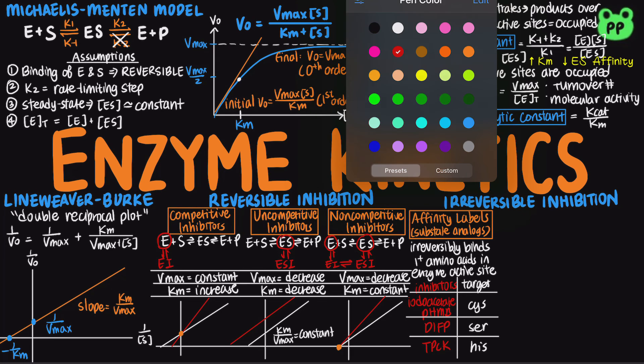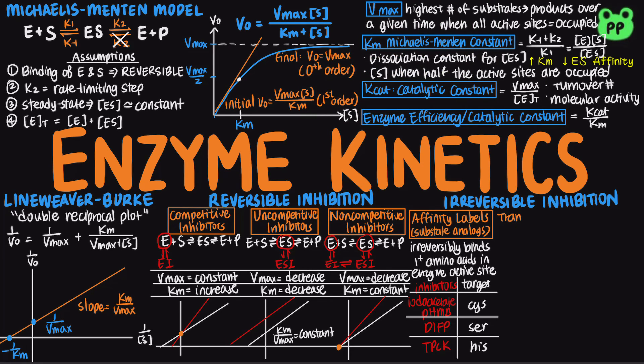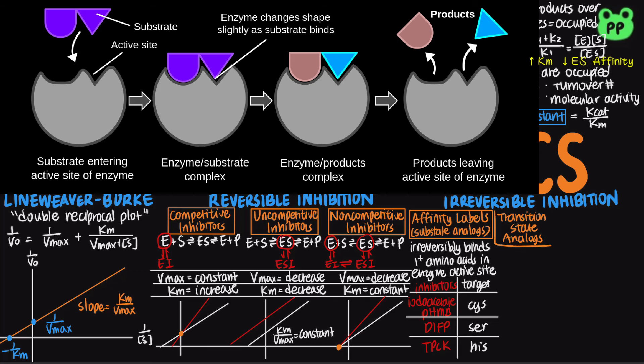Another type of irreversible inhibitors are transition-state analogs, which resemble the transition state and bind to enzyme better than the substrate. Recall that in the induced fit model, the active site is most complementary to the transition state.